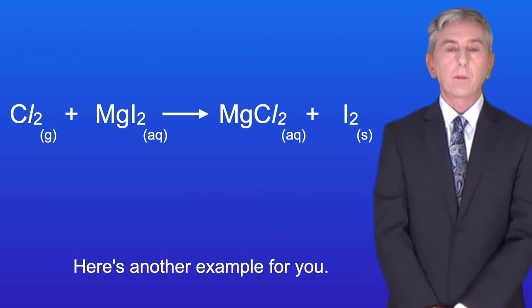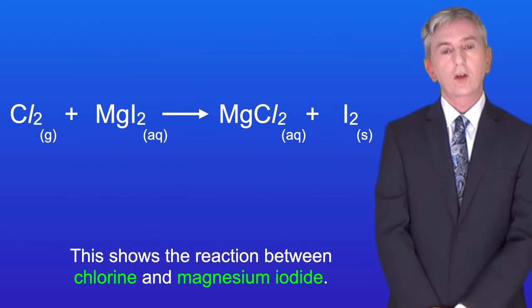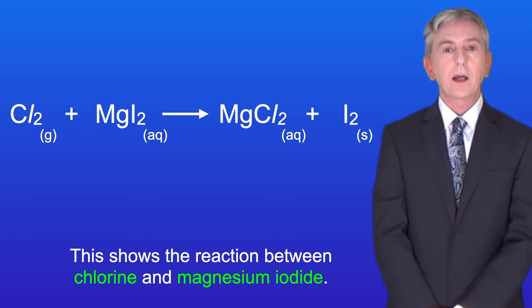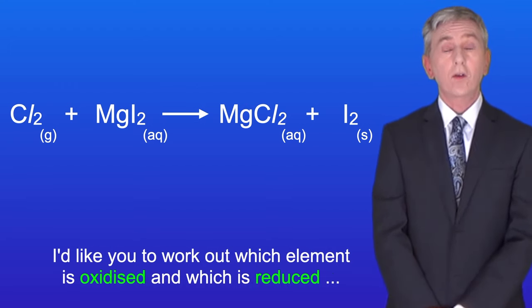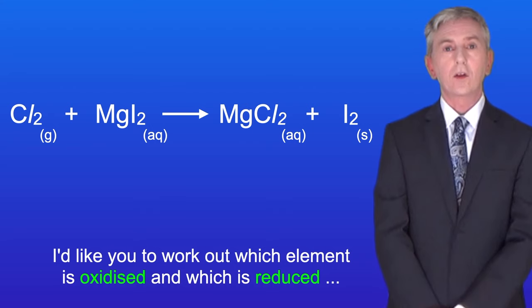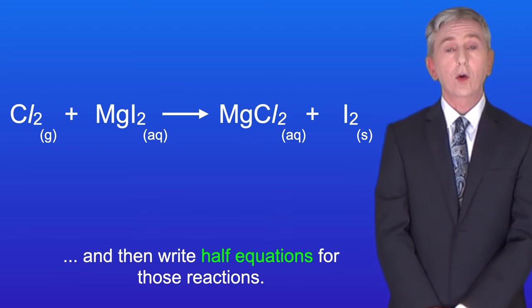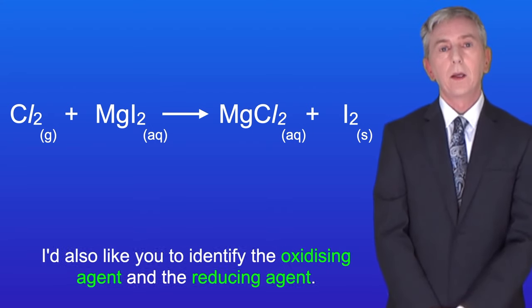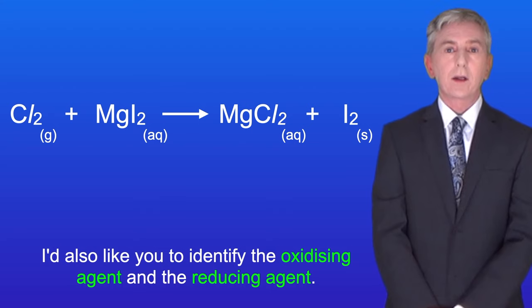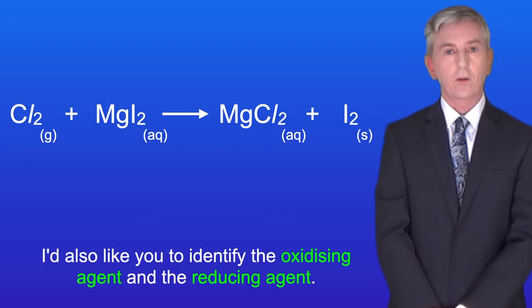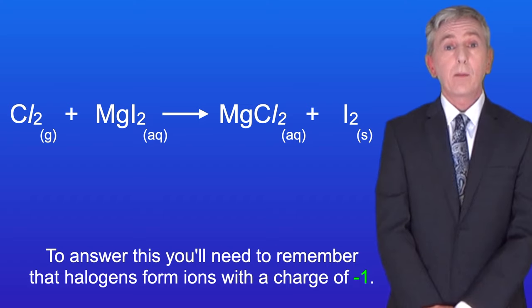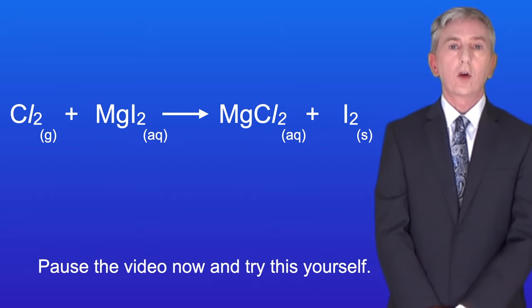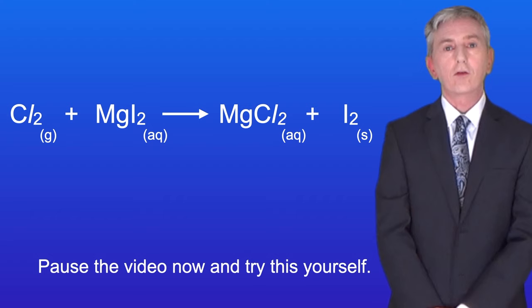Here's another example for you. This shows the reaction between chlorine and magnesium iodide. I'd like you to work out which element is oxidized and which is reduced, and then write half equations for those reactions. I'd also like you to identify the oxidizing agent and the reducing agent. To answer this, you'll need to remember that halogens form ions with a charge of minus one. Pause the video now and try this yourself.